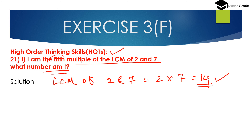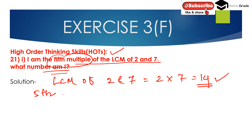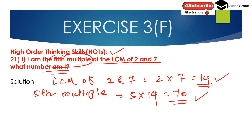The 5th multiple of the LCM is the 5th multiple of 14, which is 70. So the number is 70.